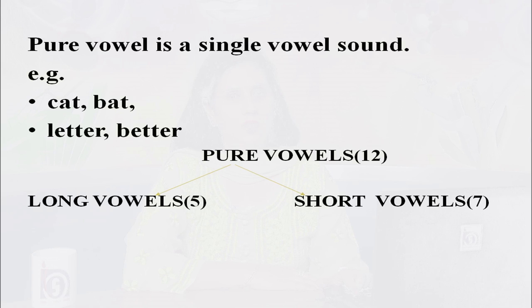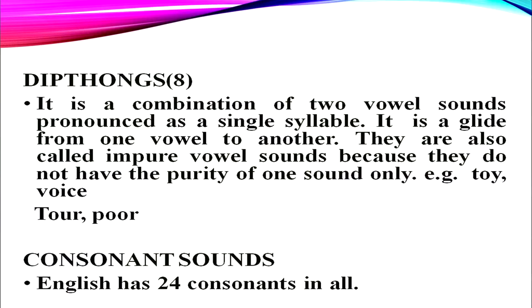A pure vowel is a single vowel sound — for example: cat, bat, letter, batter. Pure vowels, which are 12 in number, are classified as long vowels (5 in number) and short vowels (7 in number). Diphthongs, which are 8 in number, are a combination of two vowel sounds pronounced as a single syllable — a glide from one vowel to another. They are also called impure vowel sounds because they do not have the purity of one sound. Examples: toy, voice, tour, poor.